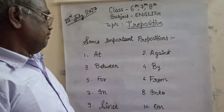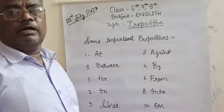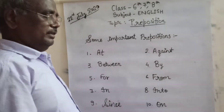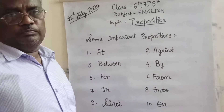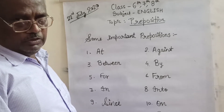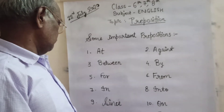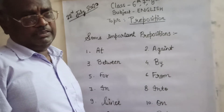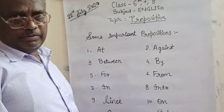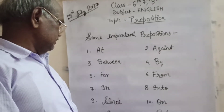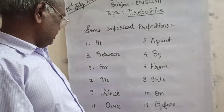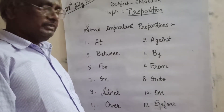'For': He came for a good pen. 'In': He is in the room. I am in the room. You are in the room. She is in the room. 'Since': She has been reading since morning. We have been playing since 3 o'clock. They have been coming since evening.